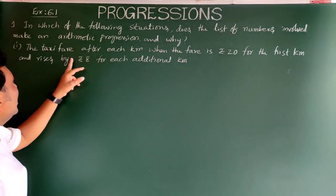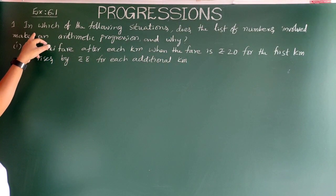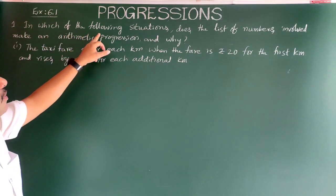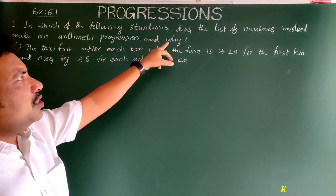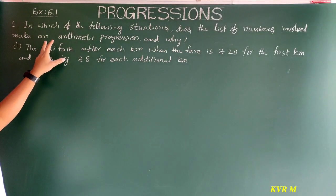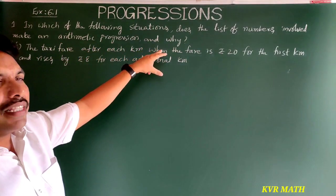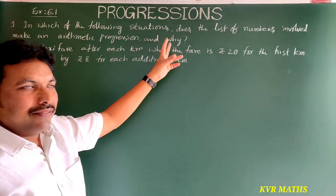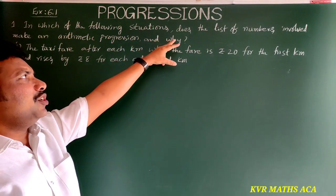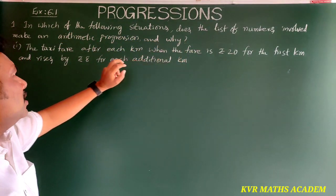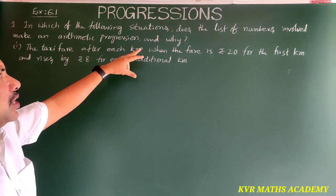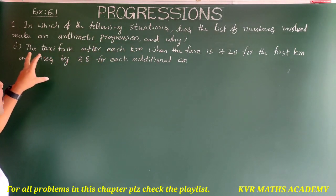The first problem in Exercise 6.1 asks: in which of the following situations does the list of numbers involved make an arithmetic progression, and why?